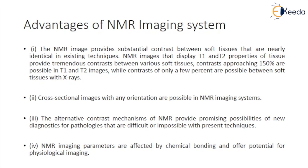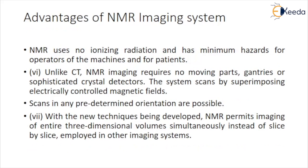NMR imaging parameters are affected by chemical bonding and offer potential for physiological imaging. NMR uses no ionizing radiation and has minimum hazard for operators and patients. Unlike CT, NMR imaging requires no moving parts, gantries, or sophisticated crystal detectors. The system scans by superimposing electrically controlled magnetic fields.